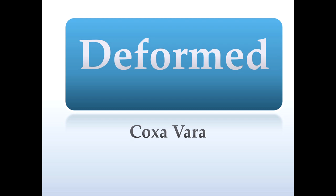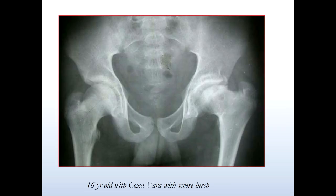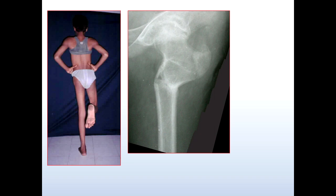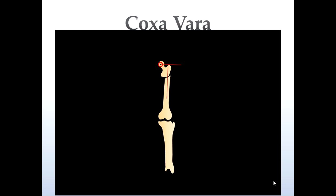Let's come to deformed hips in coxa vara. These are old cases in which we do things with external fixation. This young lad has coxa vara and a high riding trochanter, but he's got good range of adduction. All we do is a very simple montage in which we put in two half pins, rotate the fragment into adduction so that the trochanter comes down, and laterally translate the distal fragment after performing a percutaneous osteotomy. Invaginating it inside adds to the stability and improves the mechanical situation of the entire limb.